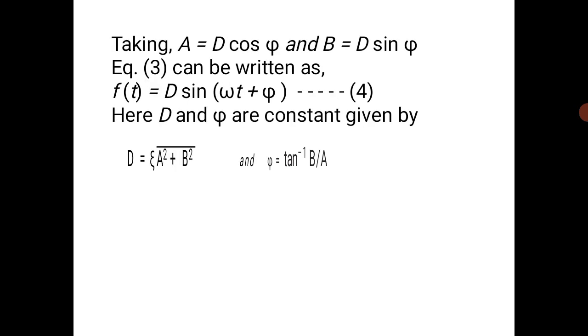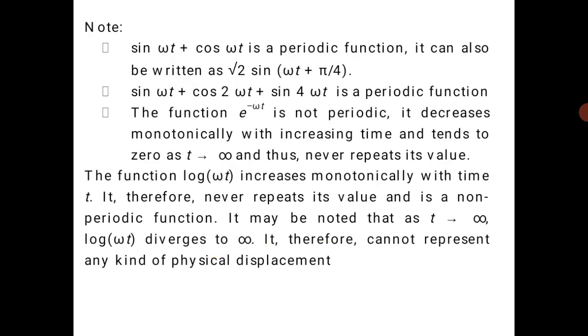Here D and φ are constants. The value of D: simply by squaring and adding, we get A² + B² = D²(cos²φ + sin²φ), which equals 1, meaning D² = A² + B². So D = √(A² + B²). The addition of two equations of simple harmonic motion is again an equation of simple harmonic motion.